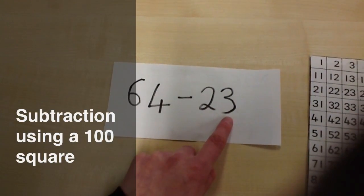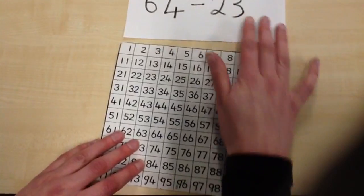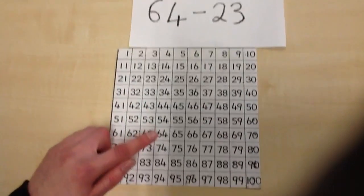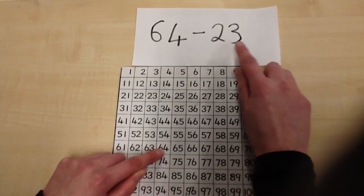64 take away 23. So I go to my 100 square and I find 64.